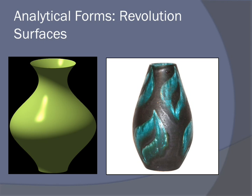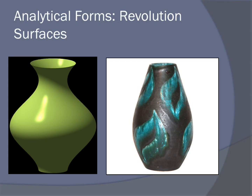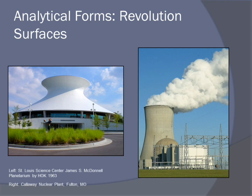A revolution surface is easiest described as rotating a curve around a straight line. To better understand revolution surfaces, just think of a potter throwing a pot on the wheel — you have the rotation surface in the middle and as the pot goes around, they form the curvature. If you were to cut a pie slice out of there, you would see that straight line that's been revolved around the center. Some examples of revolution surfaces include the Science Center here, but the most popular one found all over the country is the cooling tower for nuclear power plants.